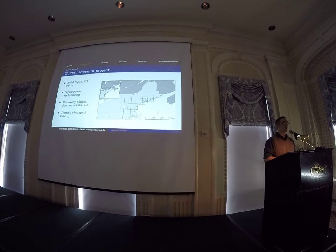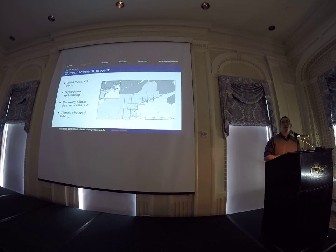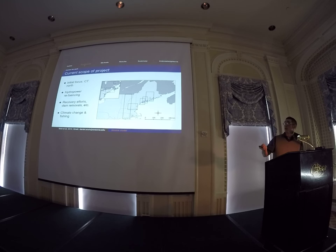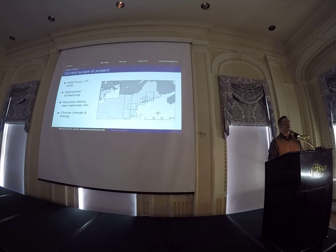Right now the project is focused throughout the Northeast. We've got five what we're calling tier-one rivers — not because we like them best, but they just have upcoming re-licensing events, ongoing negotiations, or species protection plans being developed based on dam removals, dam re-licensing, or pump storage facility re-licensing. Within this scope, we're also starting to look at ideas like climate change effects, but also potential commercial and recreational fisheries moving forward.